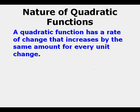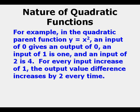Now for a quadratic function, it has a rate of change that increases by the same amount for every unit change. For example, in the quadratic parent function y equals x squared, an input of 0 gives an output of 0, an input of 1 is 1, an input of 2 is 4. For every input increase of 1, the output value difference increases by 2 every time.